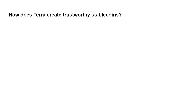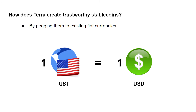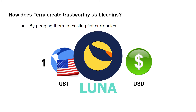How does the Terra Protocol make stablecoins that give people confidence? They do that by pegging them to existing fiat currencies like the US dollar. For the rest of this video, I'm going to use UST as an example, but the idea can be extrapolated to any other stablecoin. UST is the Terra stablecoin that tracks the price of one US dollar, and the protocol tries to maintain the 1-to-1 ratio between UST and USD. The way it does this is by using the LUNA token.